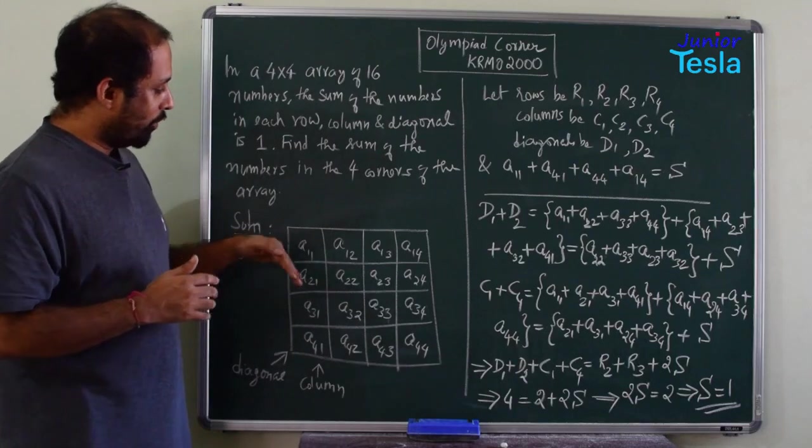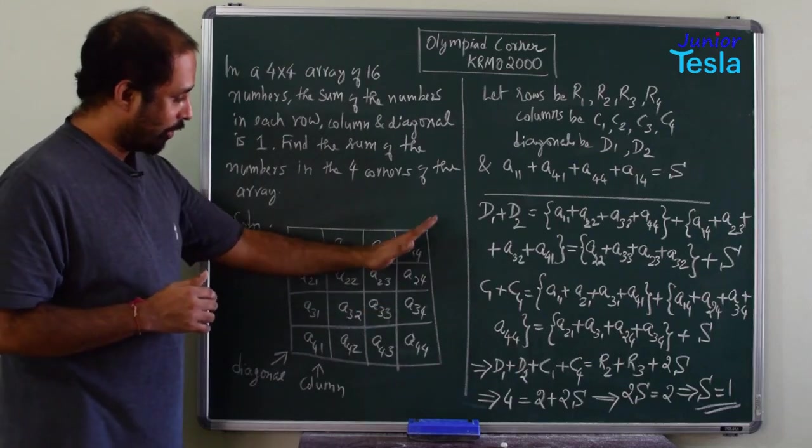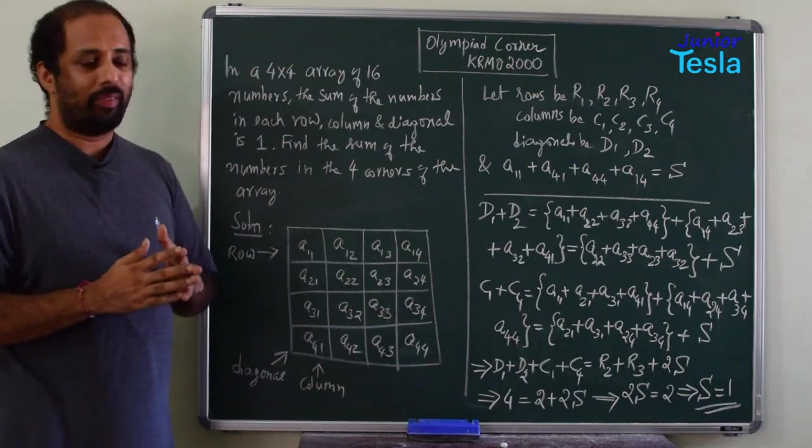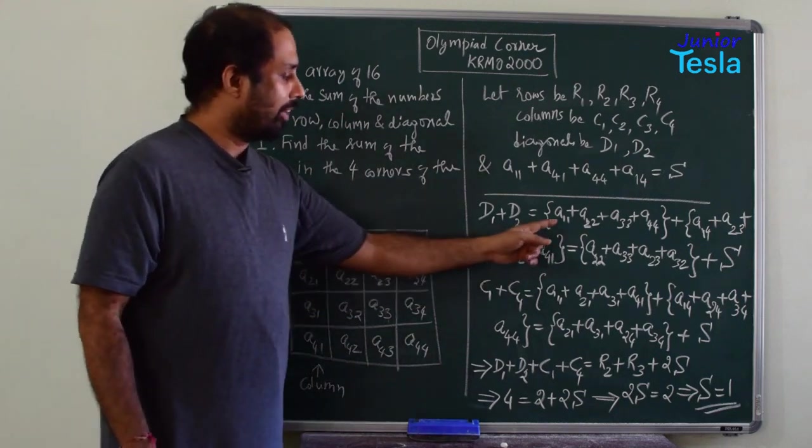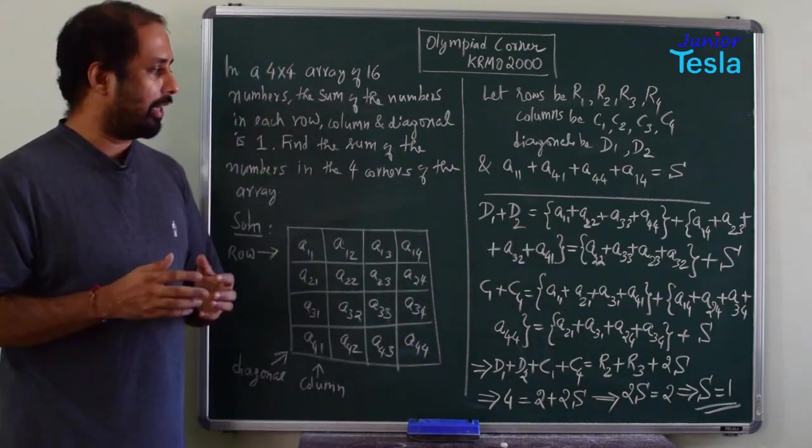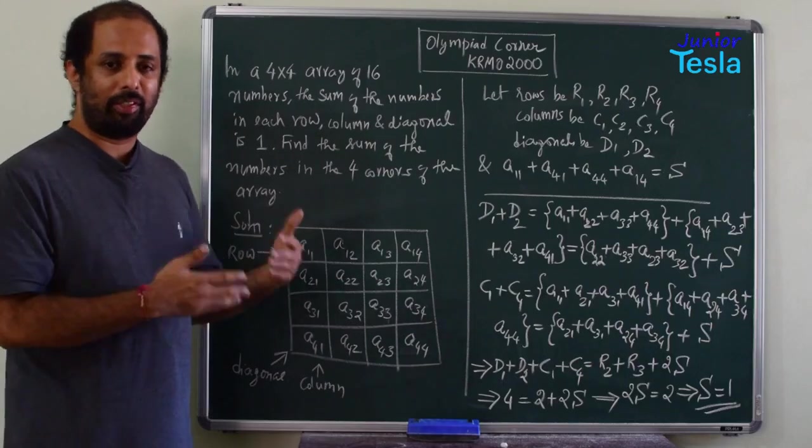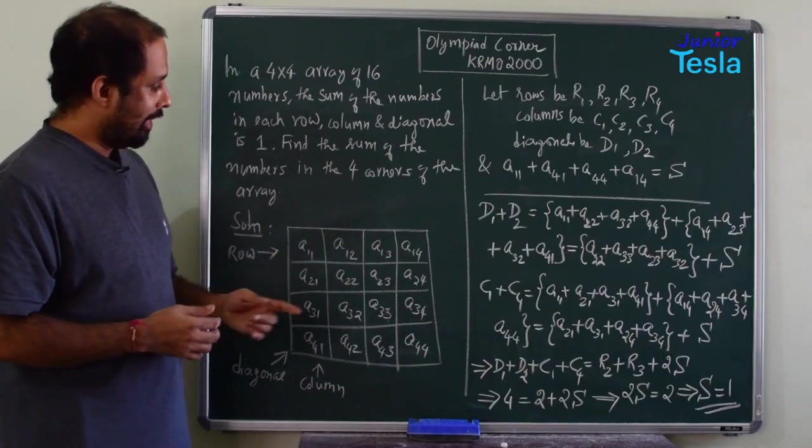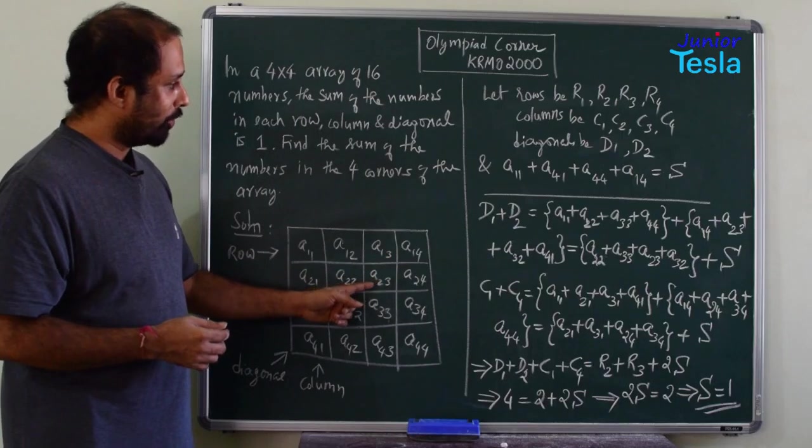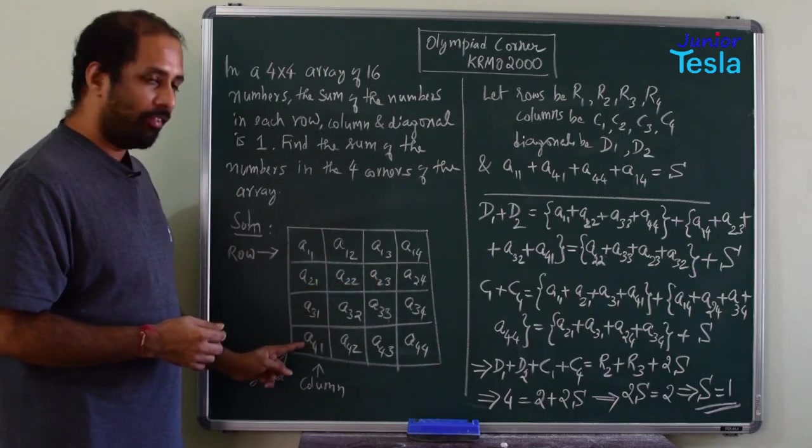Now what I am doing is I am going to take two diagonals, d1 and d2. What is d1? d1 is a11 plus a22 plus a33 plus a44. That is the major diagonal. And the second diagonal d2 is a14 plus a23 plus a32 plus a41.